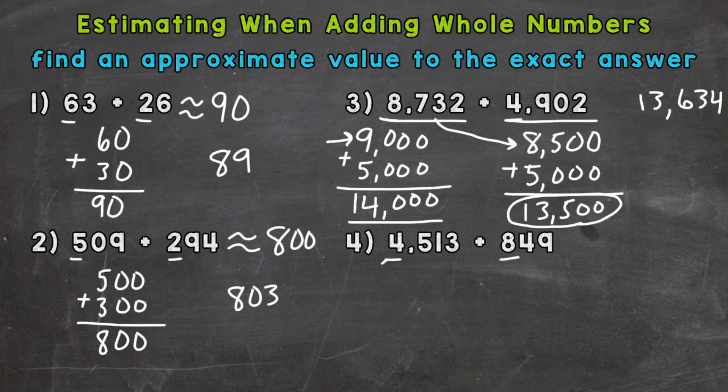Plus 849 is going to round to 800. So we would get an estimate of 5,800.